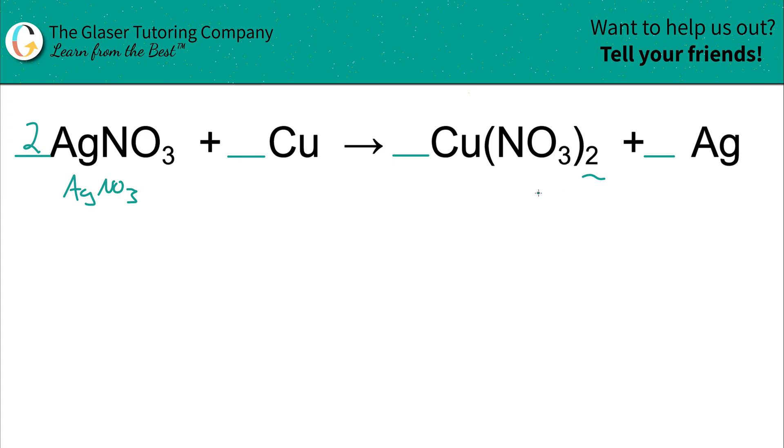Hopefully that makes sense. The next thing I'm going to do is balance the copper. Copper is the only thing that's left, and copper here has a subscript of 1. Copper is only in this compound on the right-hand side, and that has a subscript of 1. So it is balanced. You can leave these all blank if you want, or you can place ones in—it doesn't really make a difference.